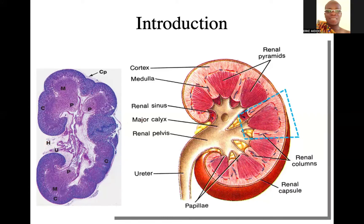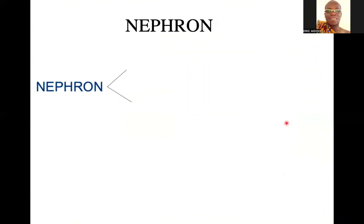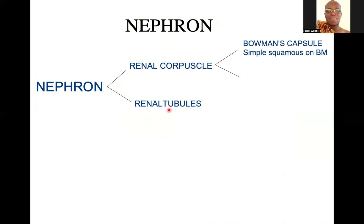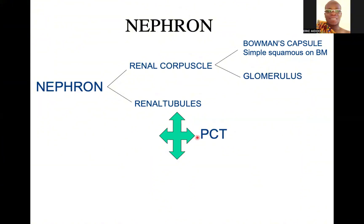This is just emphasis on the renal columns. So what is a nephron? A nephron is the functional unit of the kidney. It is made up of the renal corpuscle and then the renal tubules. The renal corpuscle is also made up of the Bowman's capsule, which is simple squamous epithelium, and then the glomerulus. The renal tubules consist of the proximal convoluted tubule, distal convoluted tubule, and then the collecting tubules.